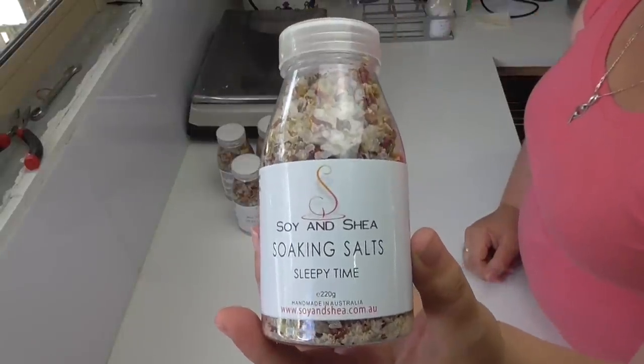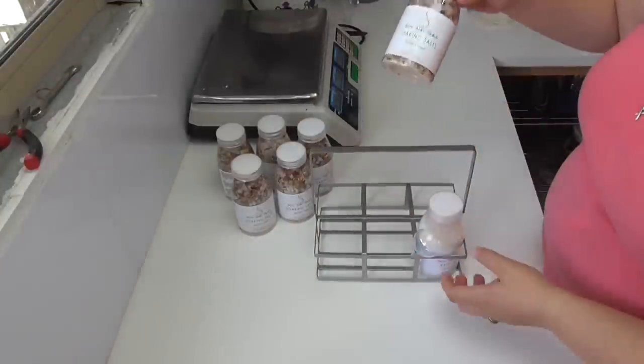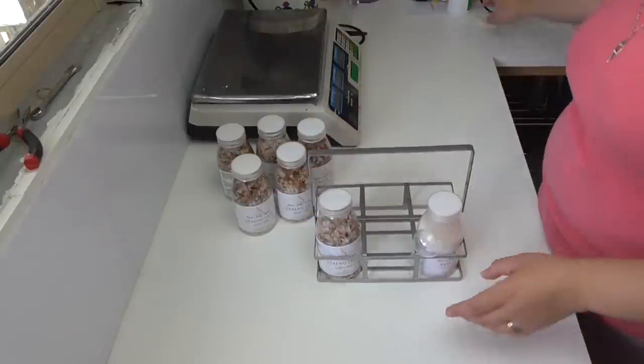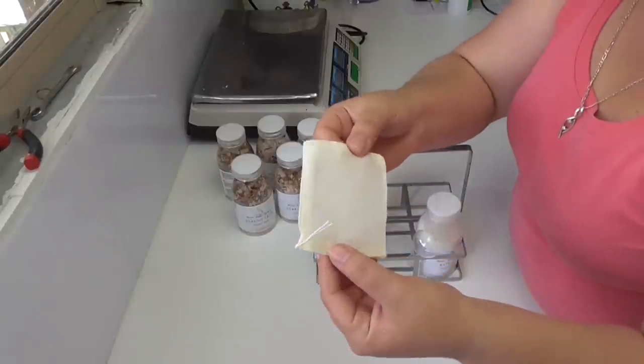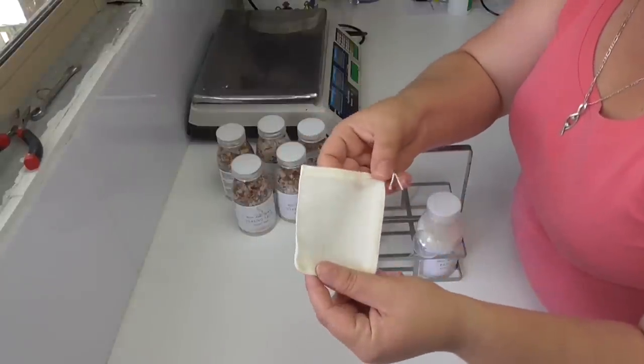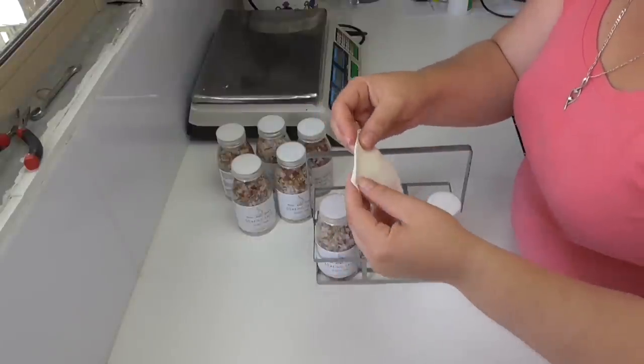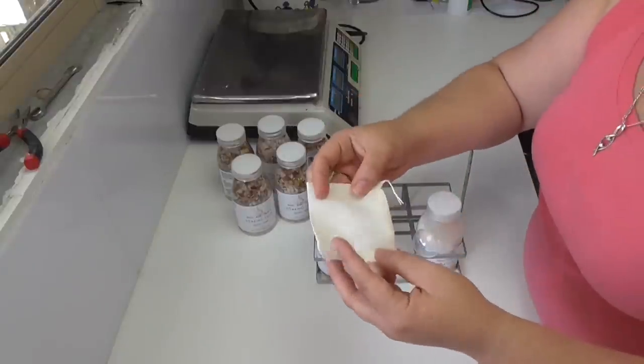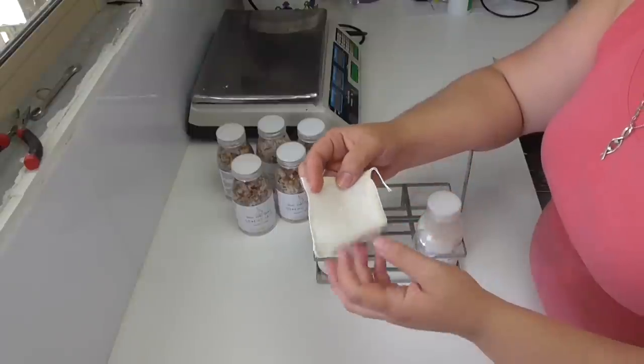There is our Sleepytime bath salts, and this one is also going to be added into this little caddy. And as mentioned, because I don't like floaties in my bathtub, I am going to include this little muslin drawstring bag. The idea is you would put some of the salts into the bag and then pop it into the bath water and let it steep like you would a cup of tea.